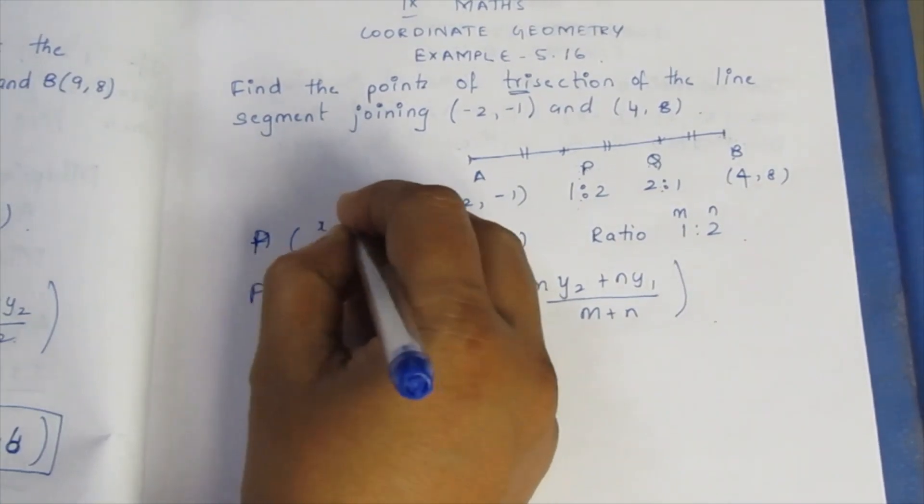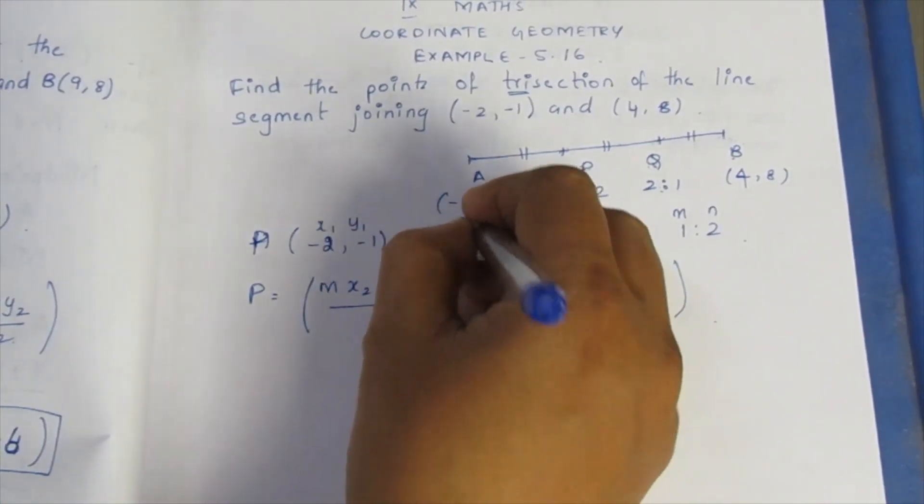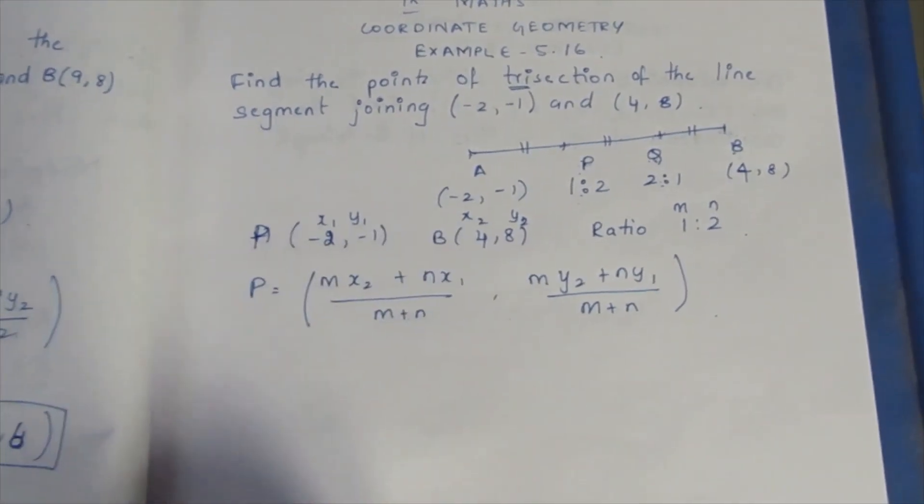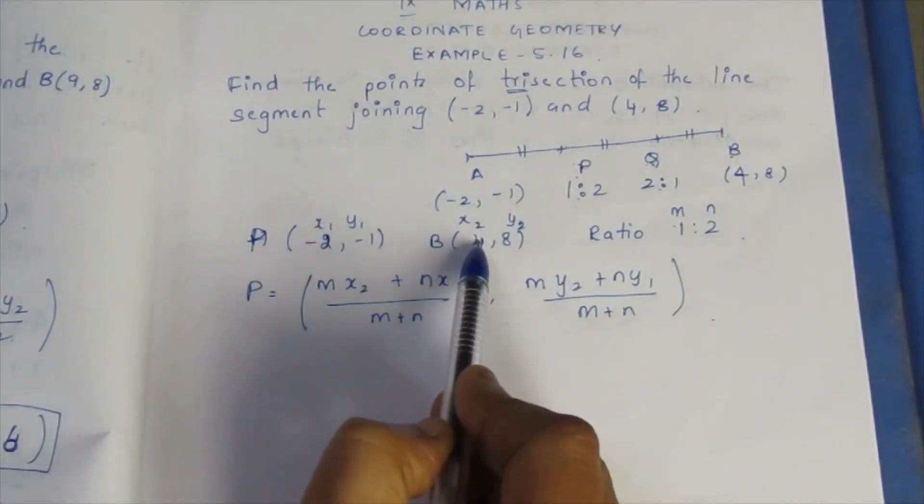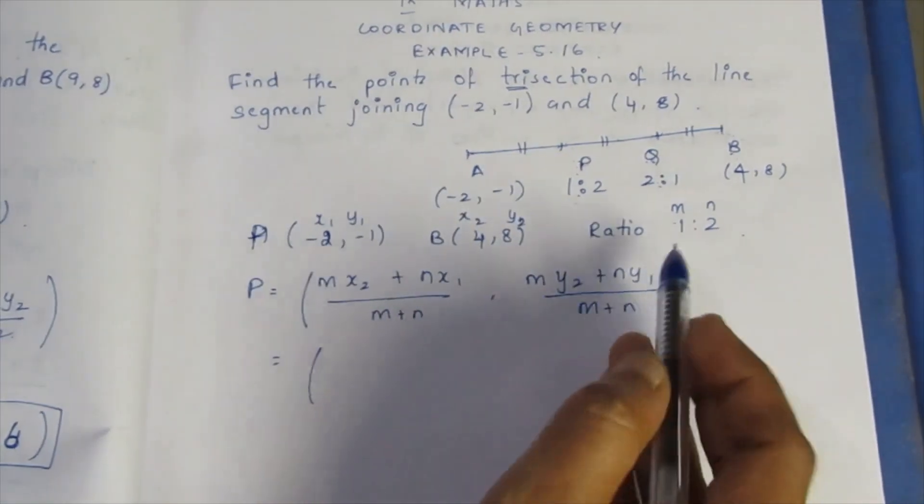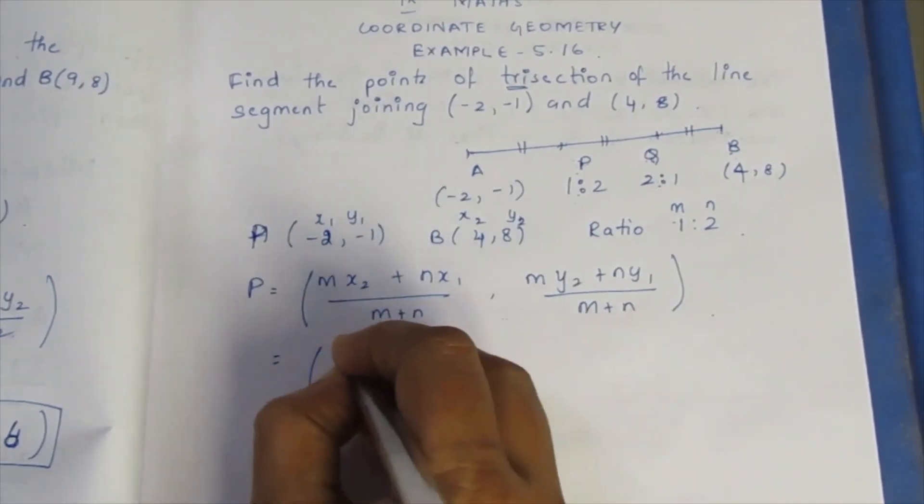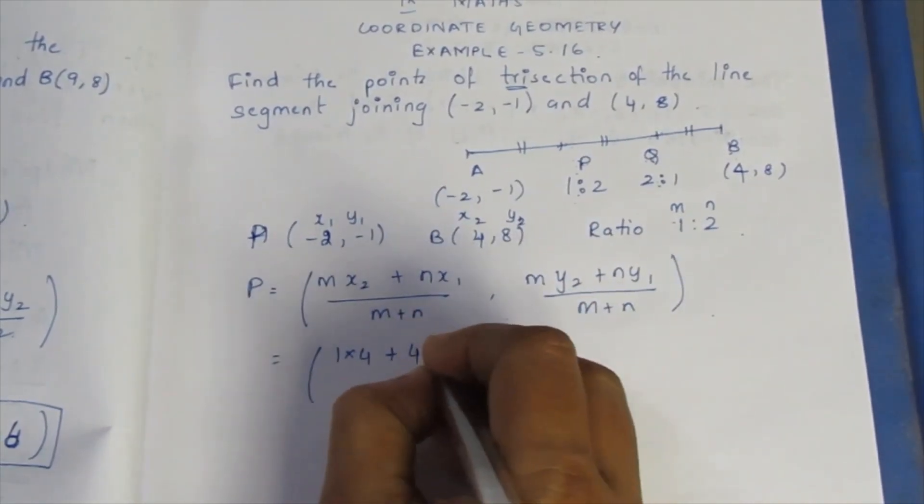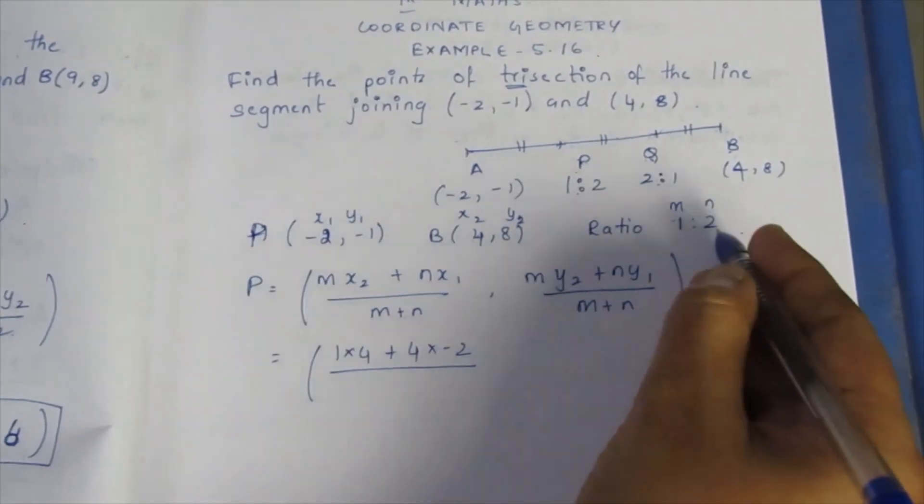This is x1, y1. This is x2, y2. Then m is 1 and n is 2. So first one into this second one, second one into the first one. So 1 into 4 plus 2 into (-2) by m plus n.